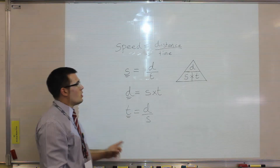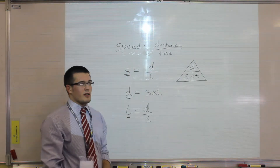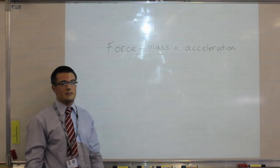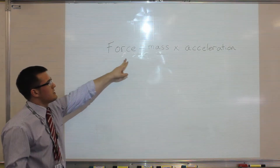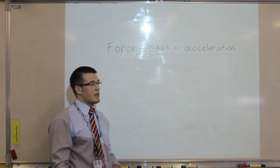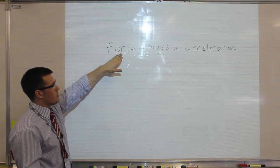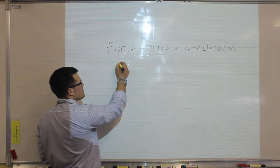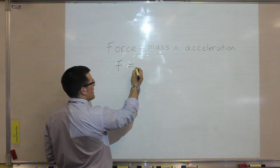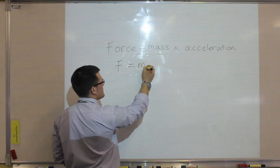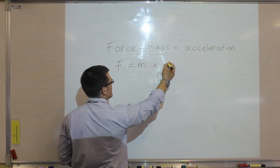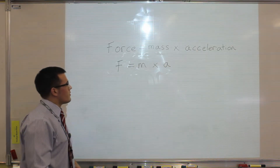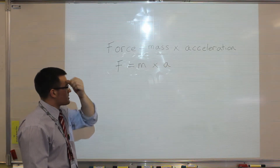Now let's look at an equation that isn't one number divided by another. This equation is Newton's second law: force is equal to mass times acceleration, and again that is how you will get it in your exam paper as words. Converting to symbols: force is capital F, mass is lowercase m, and acceleration is lowercase a, so F equals m times a.